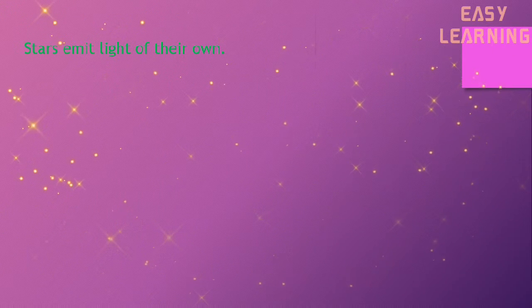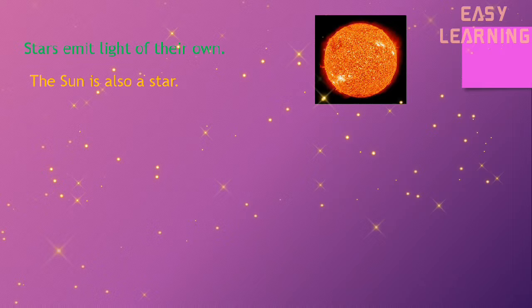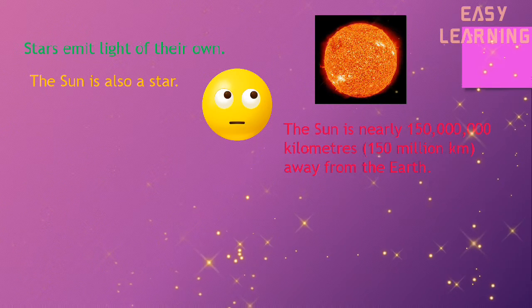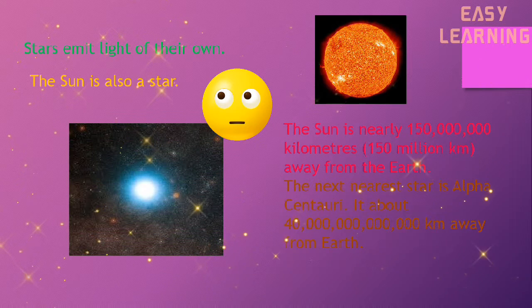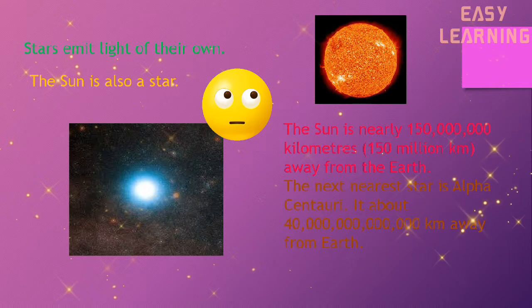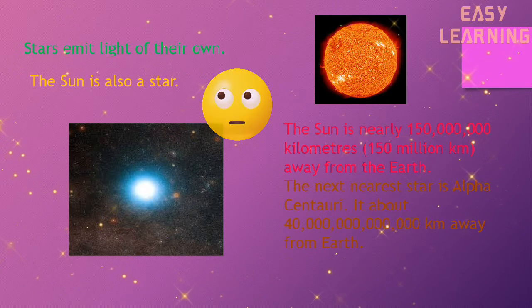Stars emit light of their own. The Sun is also a star. The Sun is nearly 150 million kilometers away from the Earth. The next nearest star is Alpha Centauri. It is about 40,000 million kilometers away from Earth.